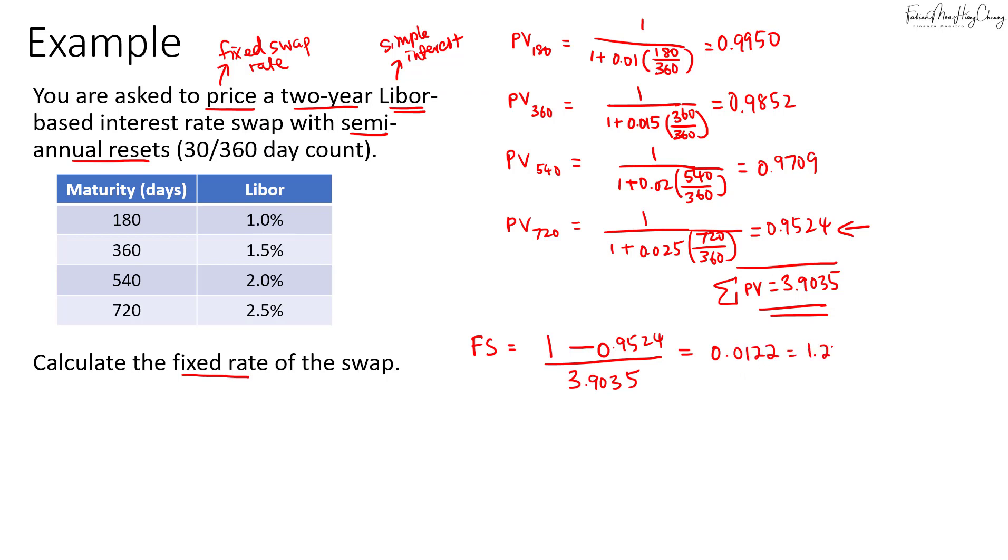But take note this is per semi-annual period because we are basing this on 180-day LIBOR, which is for every half a year. So in the exam, you have to analyze it. So we'll multiply it by 2. So I multiply by 2. So this would be 2.44% per annum. So that's very straightforward to remember. Just take 1 minus the last PV factor, and then we divide by the sum of the present value factors.